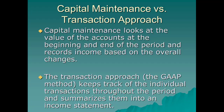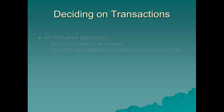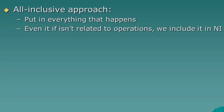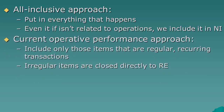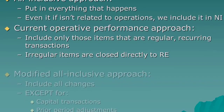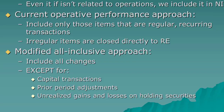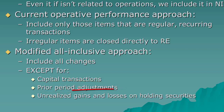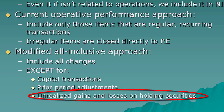Once we decided to use a transaction approach, the next question was: what transactions to include? We had three options. Option one was an all-inclusive approach — put everything in, including transactions with owners and market fluctuations like currency rate changes. Option two was the current operative performance approach, meaning we only track day-to-day operational activity and leave everything else out. The third is the modified all-inclusive approach, which is what we use — we include everything except transactions with owners, prior period adjustments, and market-driven changes. We leave out owner transactions because dividends and capital contributions aren't really income; we leave out market changes so companies can't take credit for or hide behind market fluctuations.